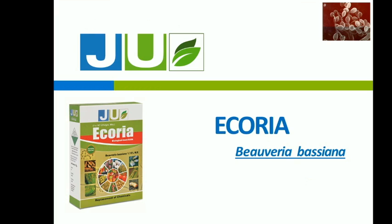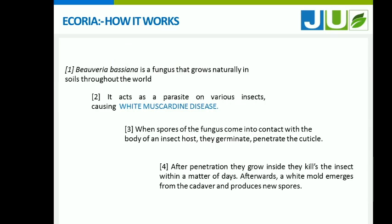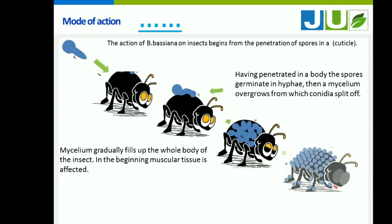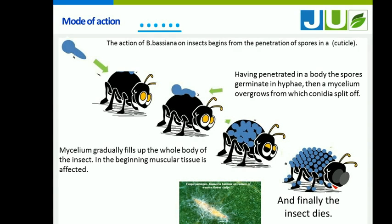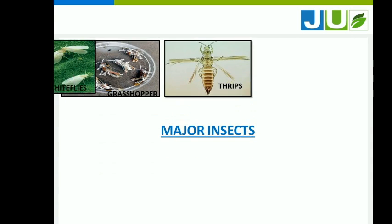Echuria is a biological insecticide. Beauveria bassiana is a fungus that grows naturally in soil throughout the world. It acts as a parasite on various insects, causing white muscardine disease. When spores of the fungus come into contact with the body of an insect host, they germinate and penetrate the cuticle. After penetration they grow inside the insect and kill it within a matter of days. A white mold then emerges from the cadaver and produces new spores.